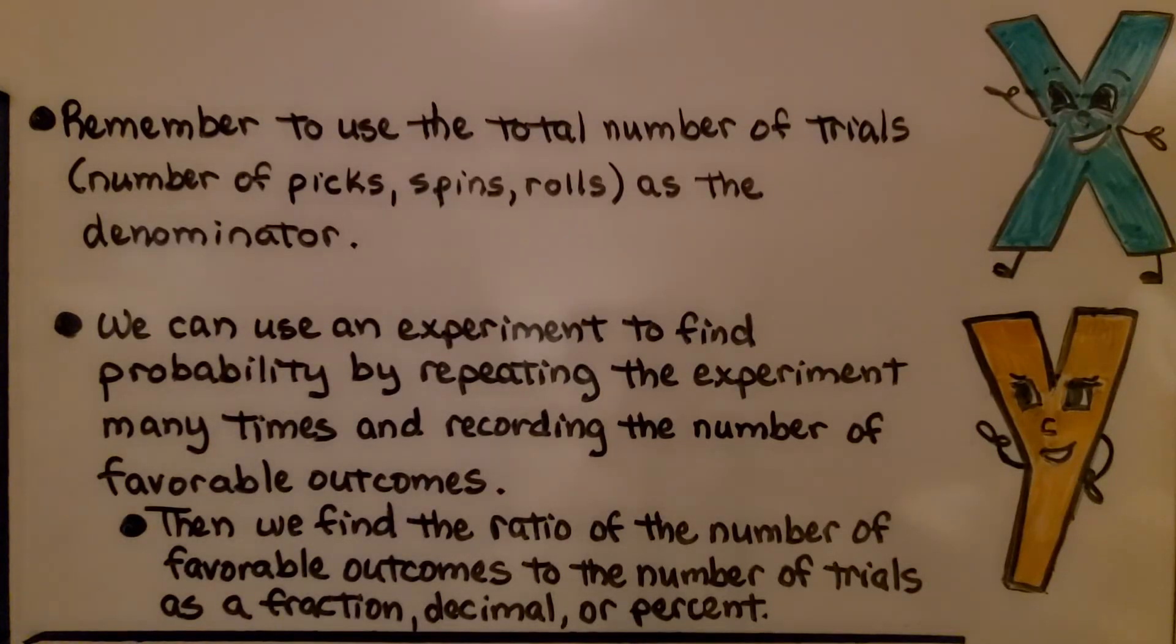Remember to use the total number of trials, that's the number of picks, spins, rolls, as the denominator. We can use an experiment to find probability by repeating the experiment many times and recording the number of favorable outcomes. Then we find the ratio of the number of favorable outcomes to the number of trials as a fraction, decimal, or percent.